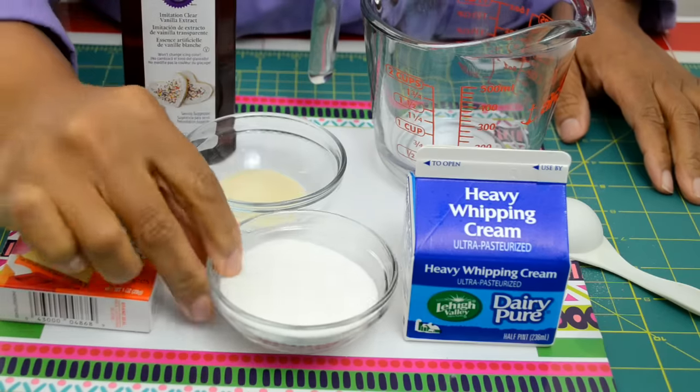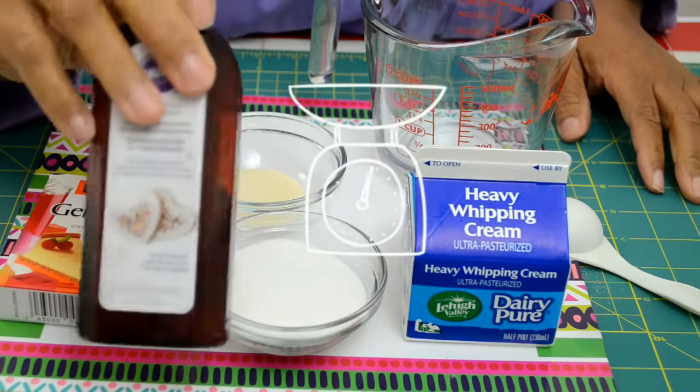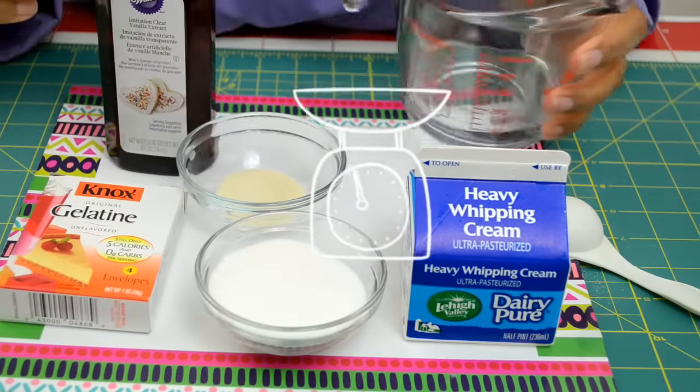For this recipe, we will need unflavored gelatin, sugar, vanilla, water, and whipping cream.